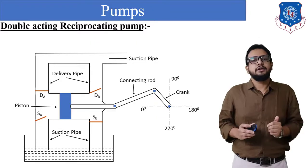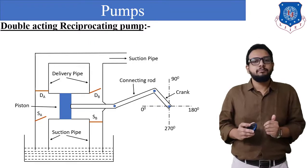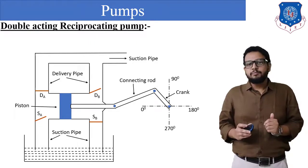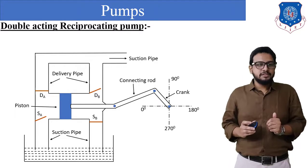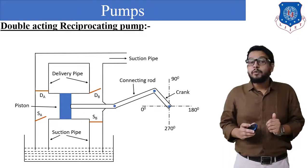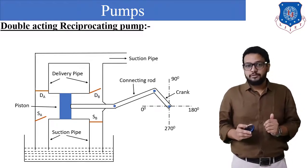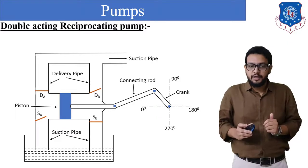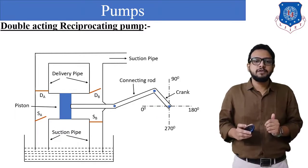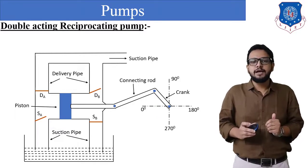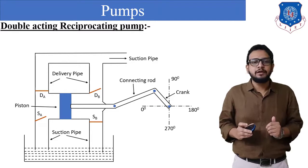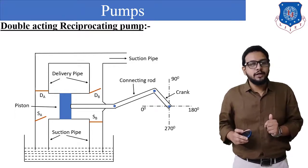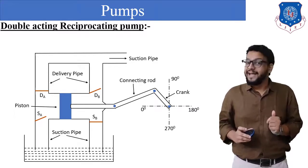As you can see the diagram of a double-acting reciprocating pump. Now, what is the change compared to a single-acting pump? We have added two pipes on the right side — one is the suction pipe and another is the delivery pipe. So we can see two suction pipes and two delivery pipes, which is very clear from the name: double-acting.